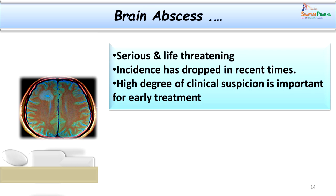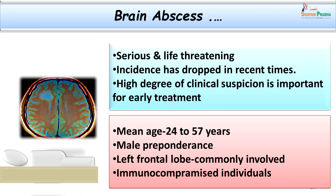Brain abscess is a serious and life-threatening infection. Its incidence has dropped in previous decades due to the advent of effective antibiotics. A high degree of clinical suspicion is very important to diagnose the case clinically, confirm it in the laboratory, and start specific and prompt therapy. The mean age of occurrence is between 24 to 57 years, though it can occur at any age with precipitating factors like trauma or malignancy. Male preponderance is particularly noted. Immunocompromised patients are more prone to brain abscess.